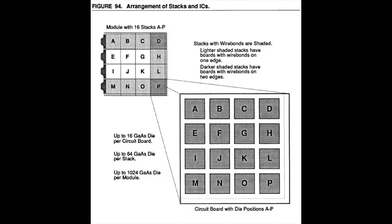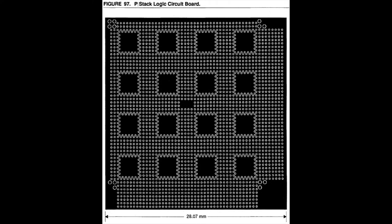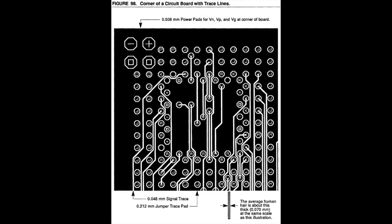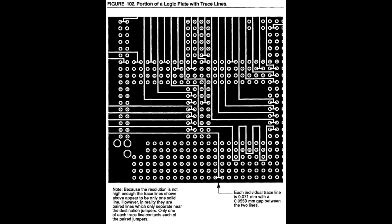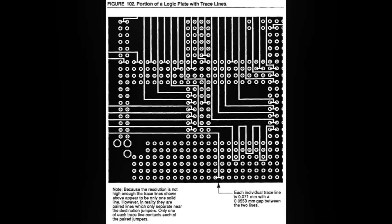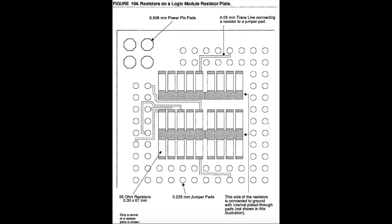The small squares in the module assembly represent the integrated circuit packages. There are 16 gallium arsenide integrated circuit packages on each circuit board. With 64 boards in a module assembly this means that there are 1024 positions in a module assembly for gallium arsenide integrated circuit packages. Here's an example of a logic circuit board showing all the vias and the positions where the gallium arsenide chips are mounted. Here are the trace lines on a logic circuit board. This is the logic plate and this image shows the trace lines on the logic plate. This is an example of the resistor plate and here's a close-up of the resistors.